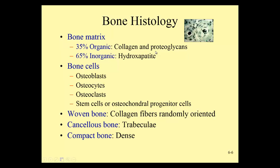The inorganic portion of bone is called hydroxyapatite — another name for the mineral salt calcium phosphate. 65% of our bone is made up of calcium phosphate, which is why calcium is important in our diet. Vitamin D is also essential because it allows us to absorb calcium from our digestive tract into the blood; without vitamin D we can't get dietary calcium into the bone. Collagen and proteoglycans make bone flexible, while calcium salts make bone hard.